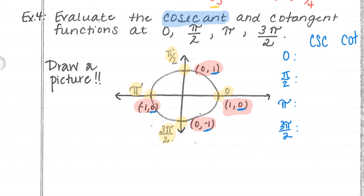So sine is all of the y's that I'm underlining in blue. So cosecant is going to be flipped. Now remember, 0 is over 1, 1 is over 1. So if I flip 0 over 1, I get undefined. If I flip 1 over 1, I still get 1. If I flip 0 over 1, I get undefined. And if I flip -1 over 1, I get -1.